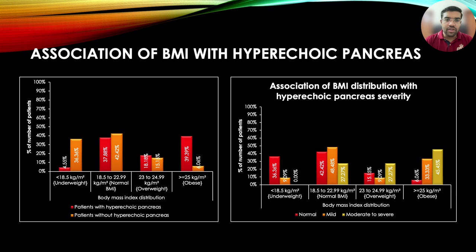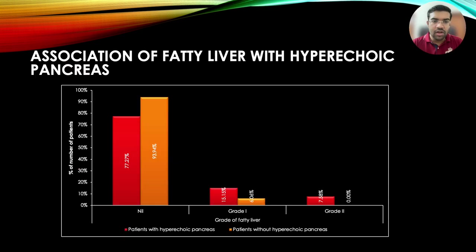Weight, BMI, and waist-hip ratio were significantly associated with presence and severity of hyperechoic pancreas, while no significant association was found with height. Our study found that higher BMI is associated with increased likelihood of having hyperechoic pancreas. When no association was found with grades of fatty liver, this may be attributed to the absence of fatty liver in the majority of subjects with hyperechoic pancreas, or that other factors may contribute more to its development.